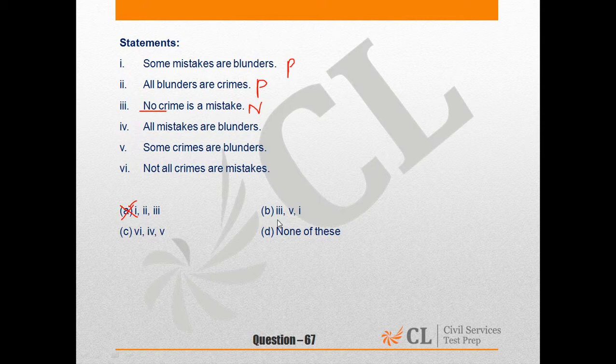Let's look at option B. It says no crime is a mistake. So if we keep it like this, no crime is a mistake. There are two separate sets. Now, the next statement is statement 5, some crimes are blunders. So we can keep it like this.